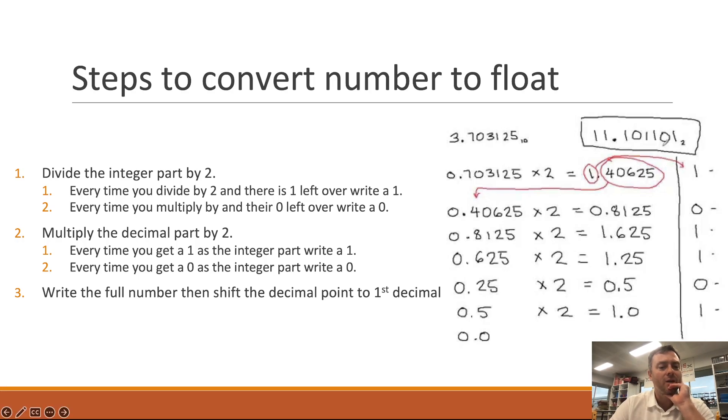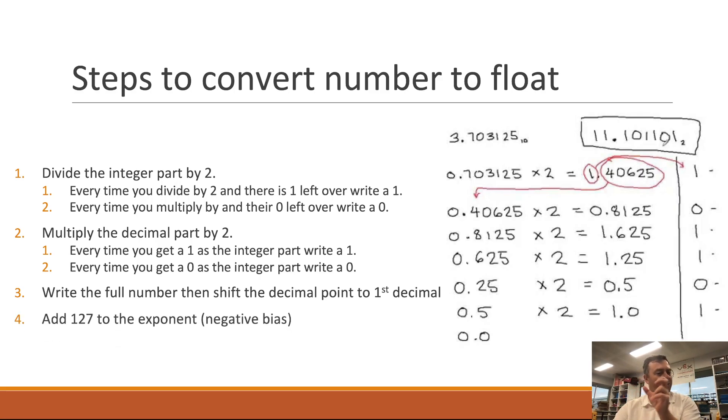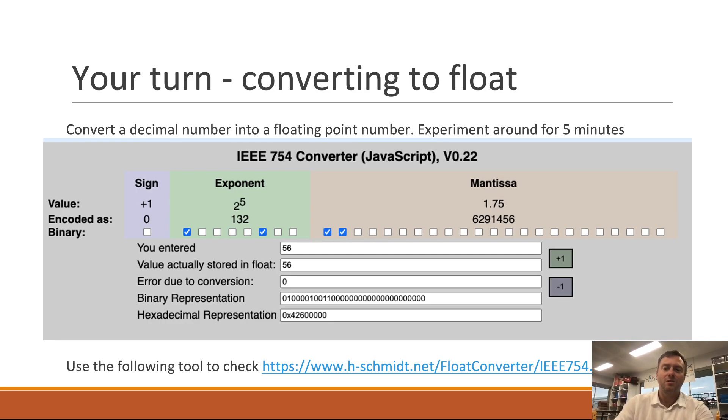So 11.10101. You then write the full number then shift the decimal place to the first decimal point. So you just shift it across and you count how many loops that you've done. From that count that becomes the exponent. You add 127 which is the negative bias to that and then it shifts it across.